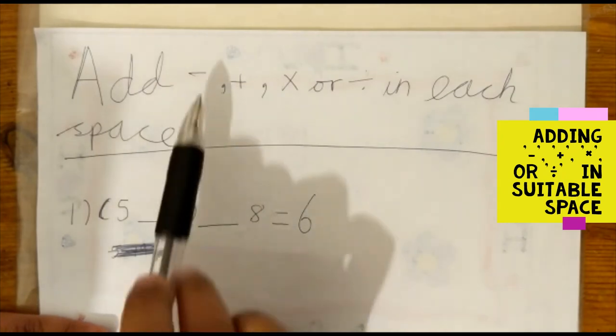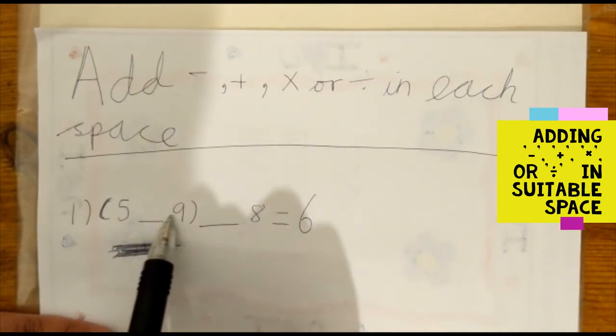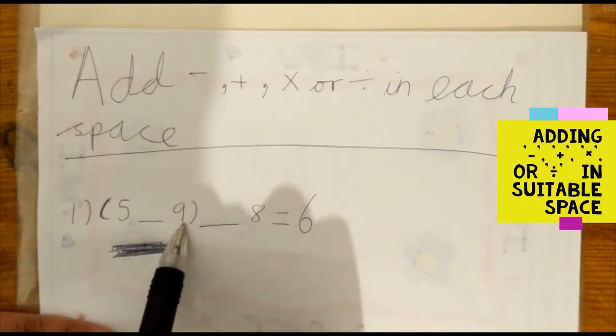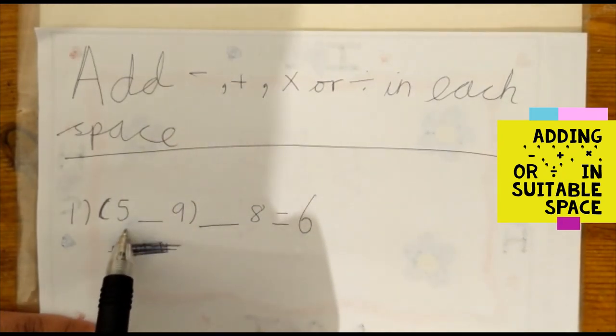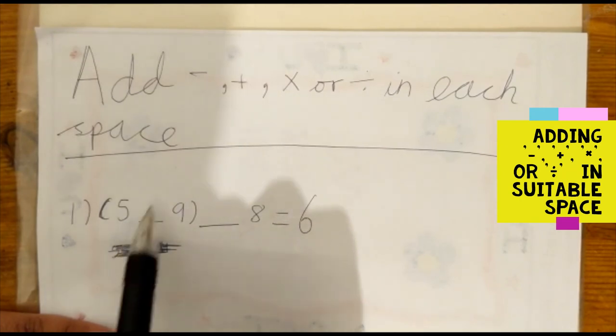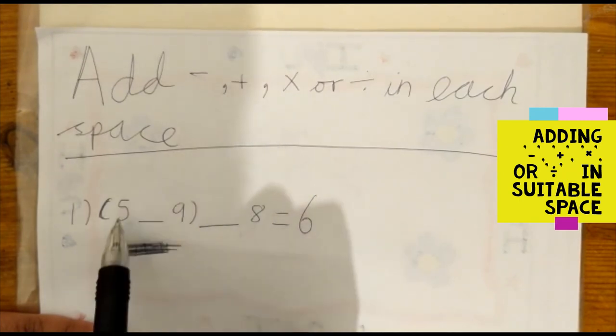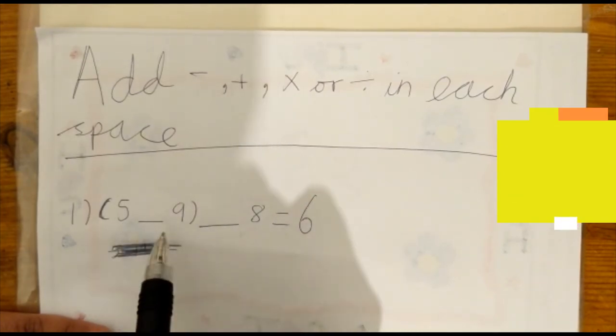So we're going to start from the beginning. 5 take away 9 we can't do because it will go into the negative numbers. So if we do 5 add 9 equals 40.